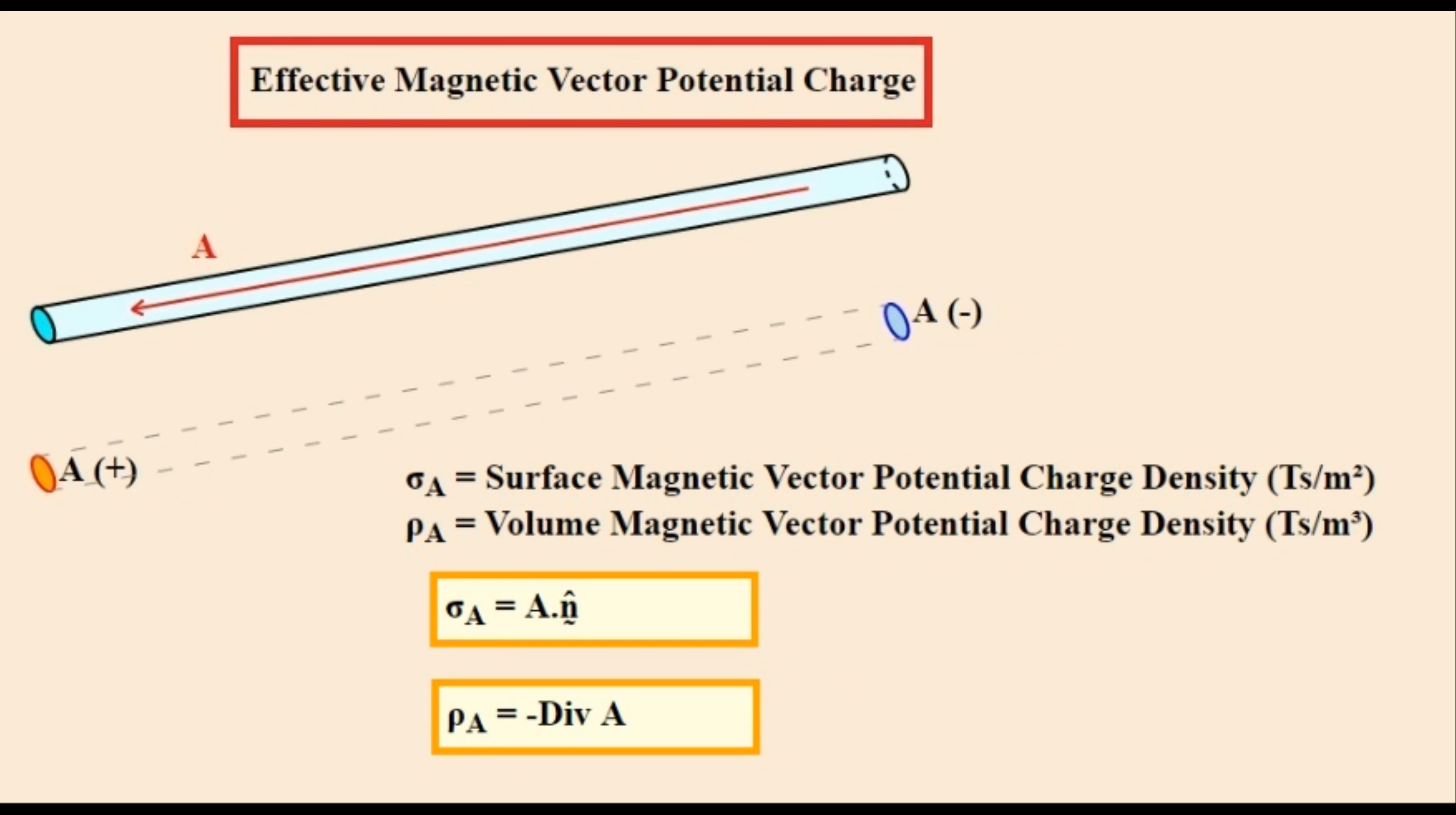The effective magnetic vector potential charge can be found too. Even though this quantity is fairly elusive and the quantity itself only barely exists theoretically and can't be measured. Its effective charge can be found at the ends of a long tube that conducts a constant magnetic vector potential caused by magnetic fields that circulate around this tube.